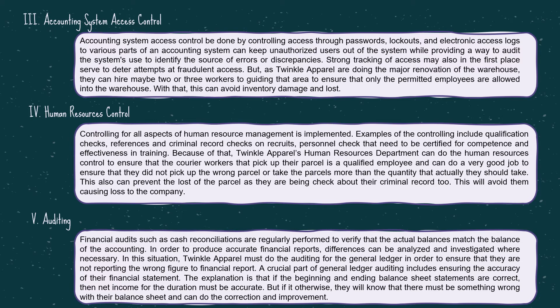Fifthly, auditing — specifically financial audits such as cash reconciliation. Twinkle Apparel must conduct auditing of the general ledger to ensure they are not reporting wrong figures in the financial report. A crucial part of general ledger auditing is ensuring the accuracy of financial statements. If the beginning and ending balance sheet statements are correct, then the income for the period must be accurate. If not, they will know there is something wrong with the balance sheet and can make corrections.